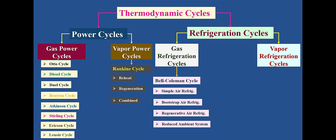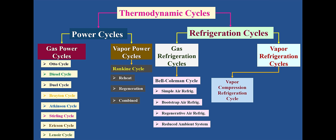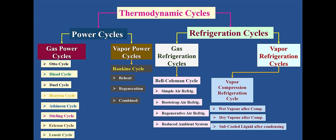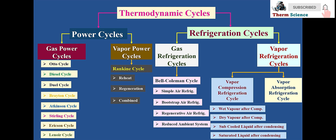Vapor refrigeration cycles are further classified as two. The first is vapor compression refrigeration cycle, which has four major components: compressor, condenser, evaporator, and expansion valve. Based on the outlet of compressor and condenser, this cycle is further classified as wet vapor after compression, dry vapor after compression, subcooled liquid after condensing, and saturated liquid after condensing. Because the compressor in vapor compression refrigeration cycle consumes more power, the vapor absorption refrigeration cycle was invented. In this cycle, the compressor is replaced by a regenerator, which requires heat that may be supplied in the form of thermal, solar, or electrical energy.